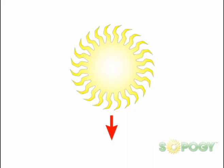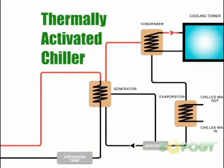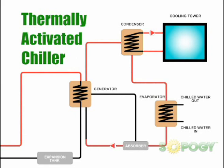In solar air conditioning, a set of SOPOG micro-CSP SOPONOVA troughs are connected to a thermally activated chiller running on heat.